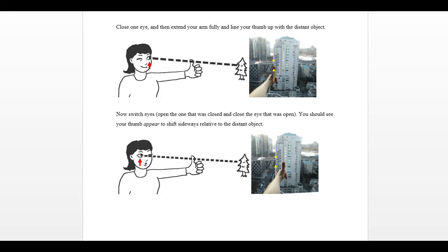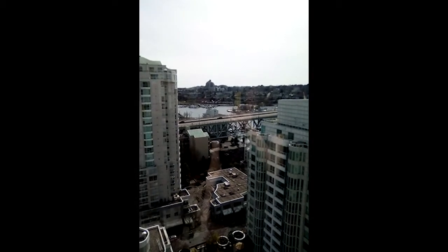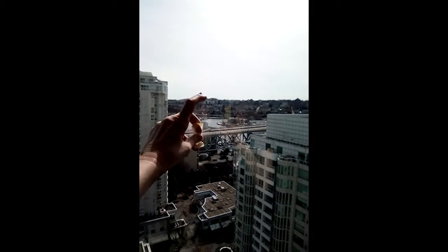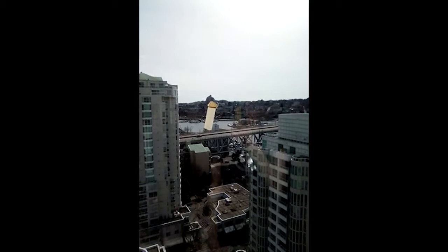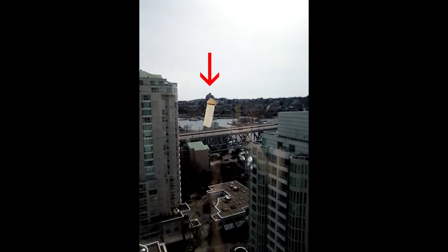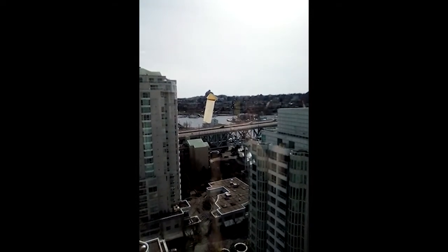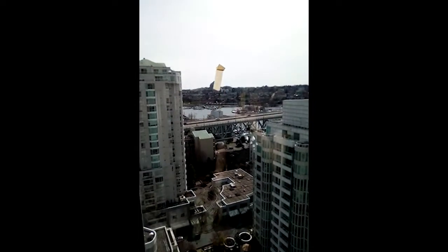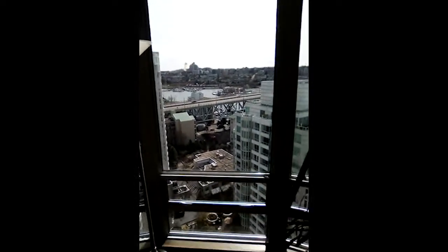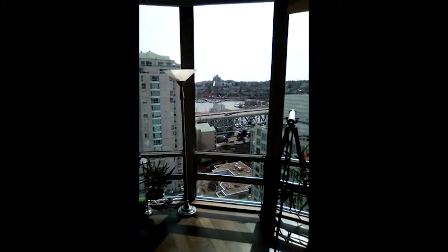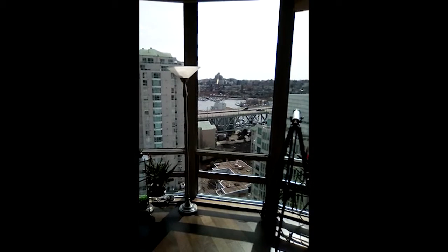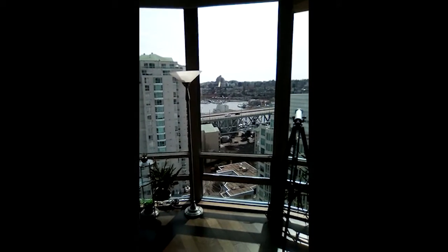There is a part B also. To do this experiment, you're going to find some distant object that you can see out a window, and you're going to take a piece of tape and stick it on the window such that it's basically lined up with that distant building. Then you want to go about four big steps back from the window — go at least four meters back if you can, that's about four big steps.